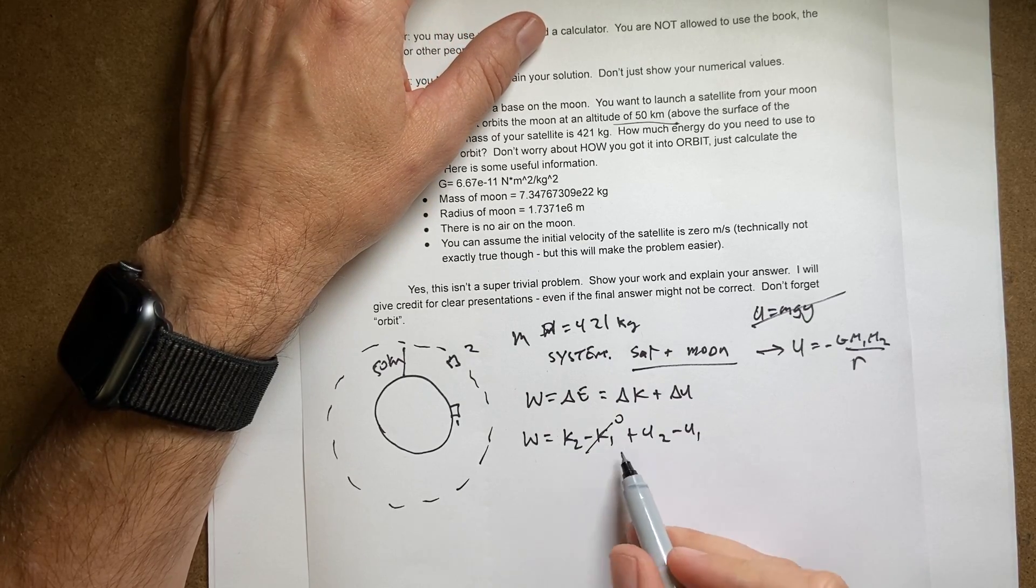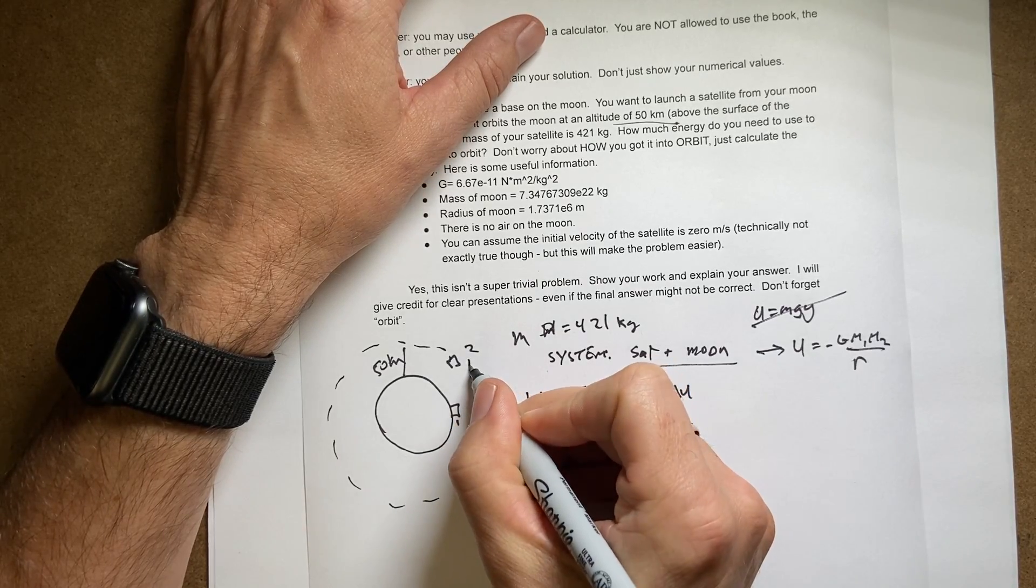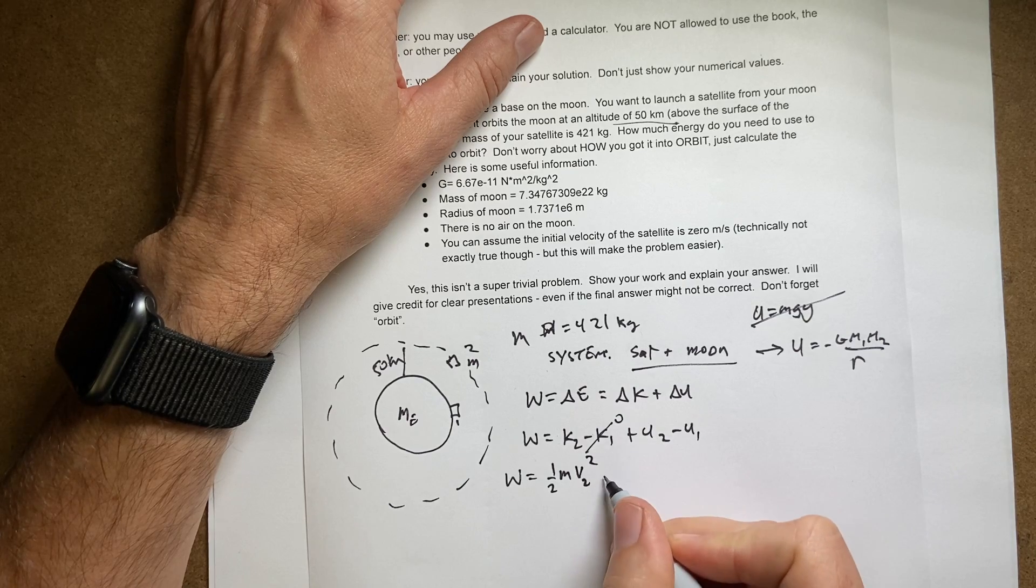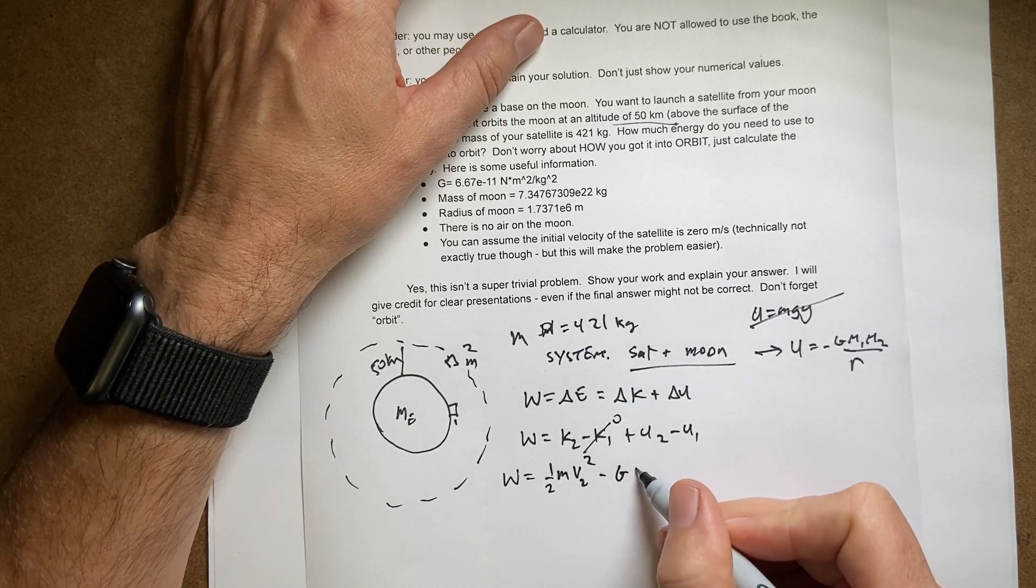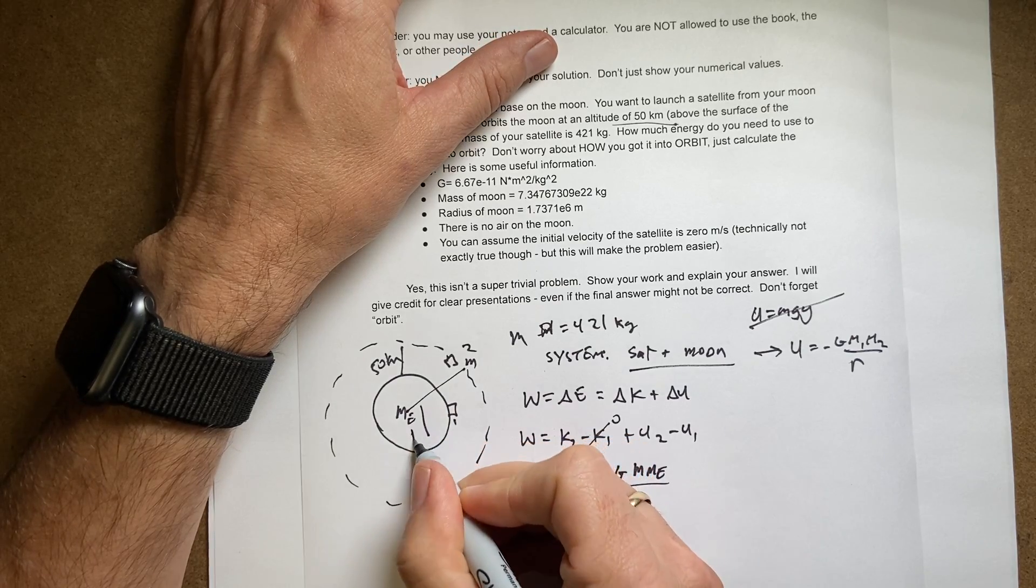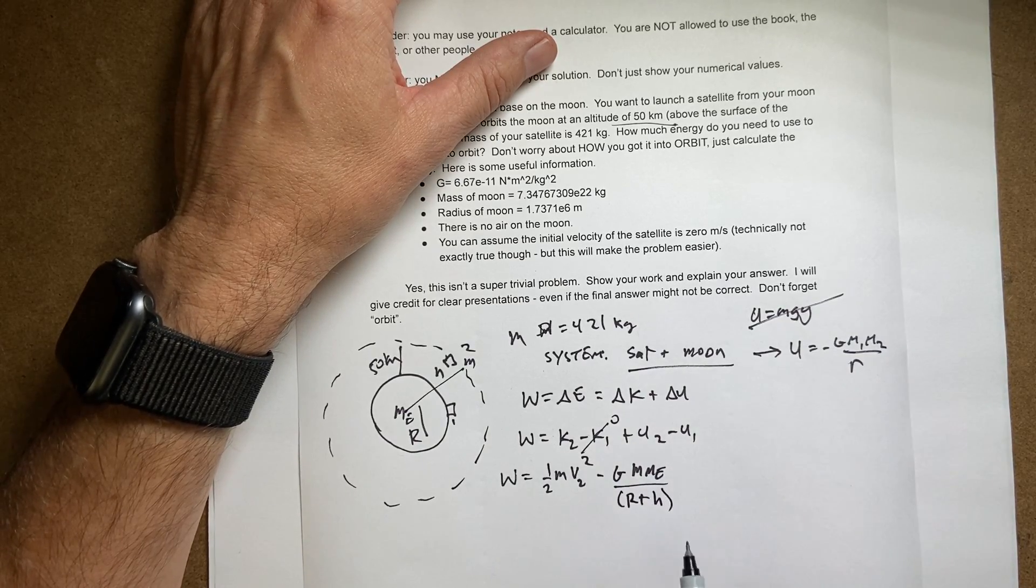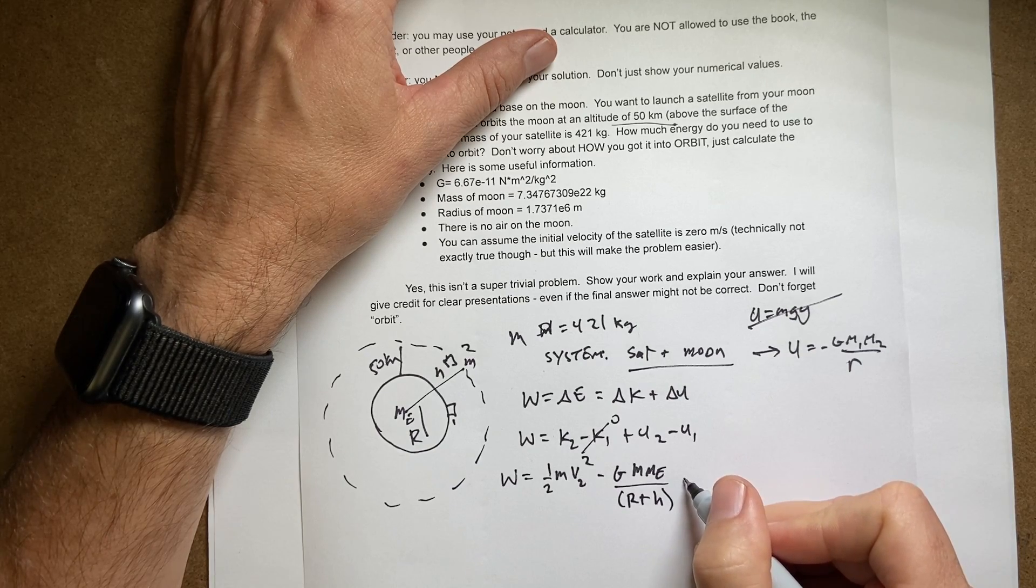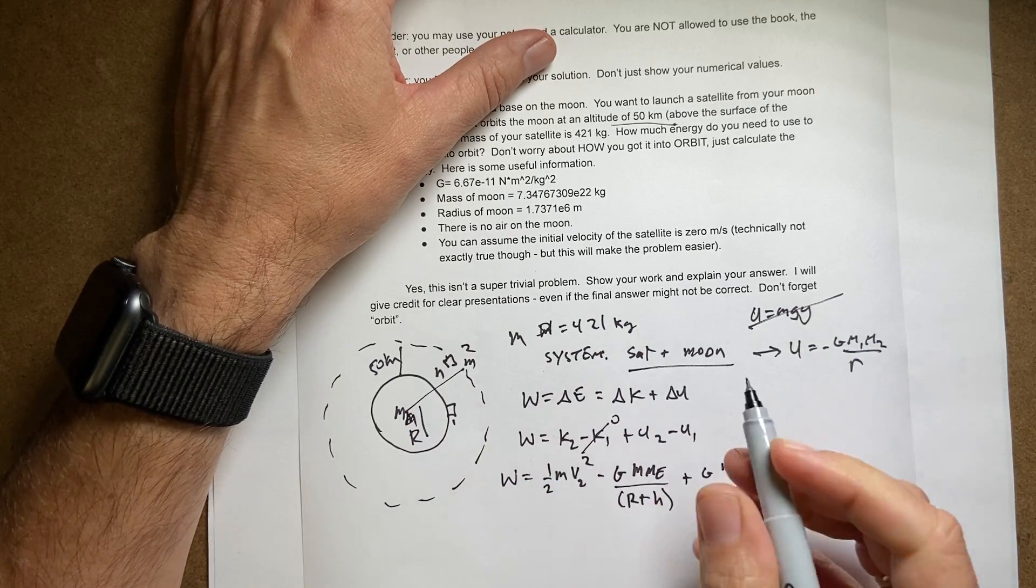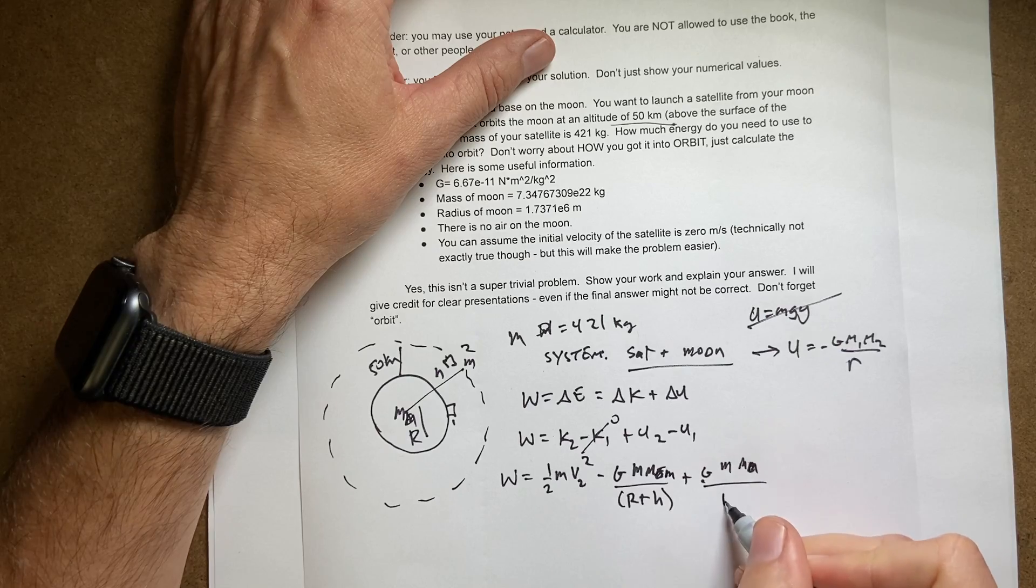So now we just need to put in all these things. Work is the final kinetic energy, one half m, I'll call this m and this m sub moon for the mass of the moon. One half m v2 squared. Now I have this one minus g, which is the gravitational constant, m mass of the moon over the distance. So this distance is going to be, let's call this the radius of the moon, big R. And let's call that h. So this is going to be big R plus h. And then minus the initial, so it's going to be minus a negative. So it's going to be plus g mass of the moon divided by just r.